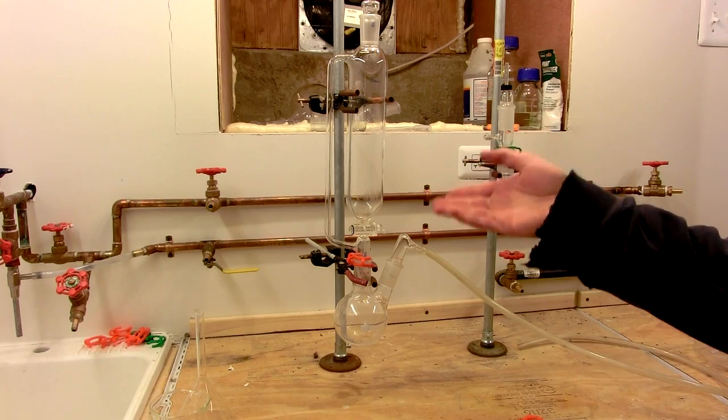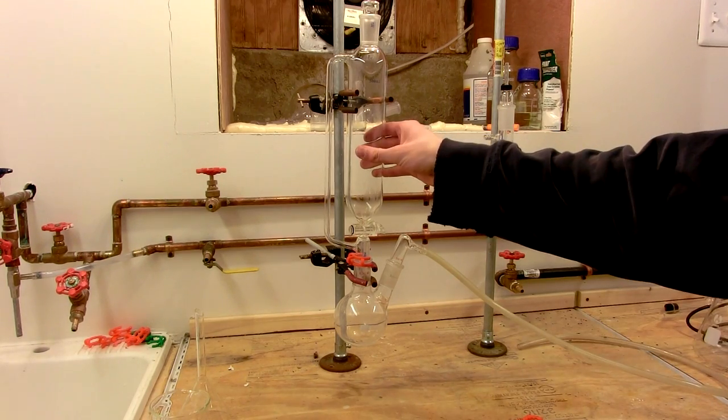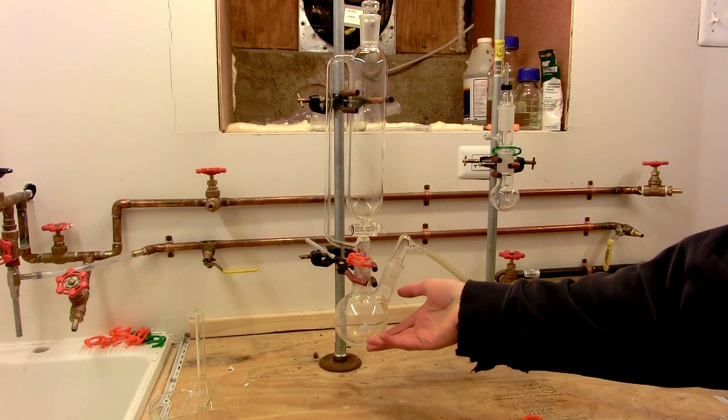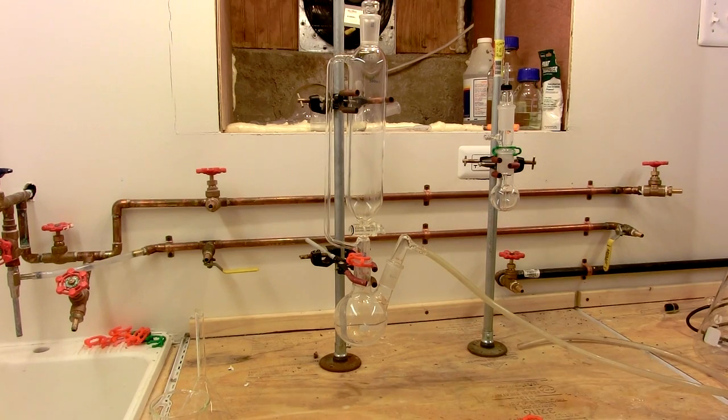This right here is a basic chlorine generator. It's a pressure equalizing addition funnel, a small flask, and a means to take a gas off of the small flask.